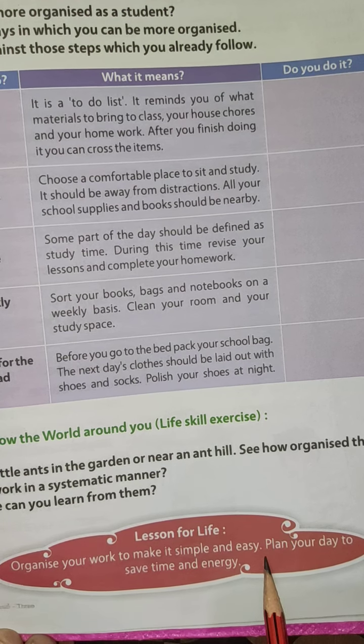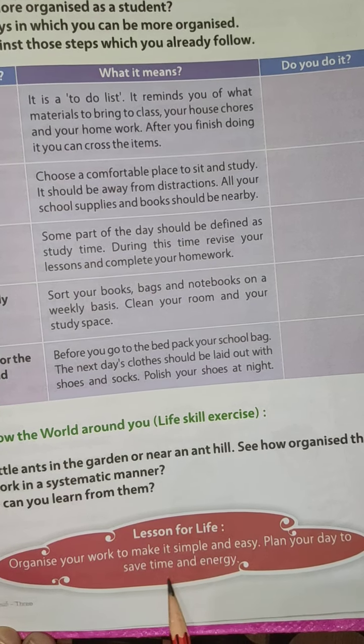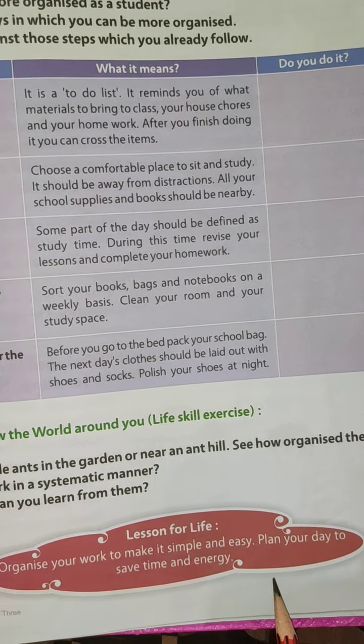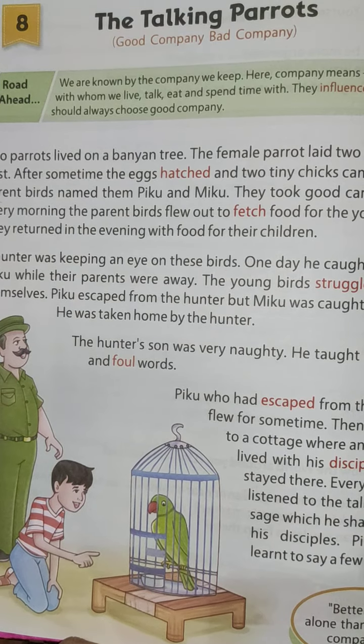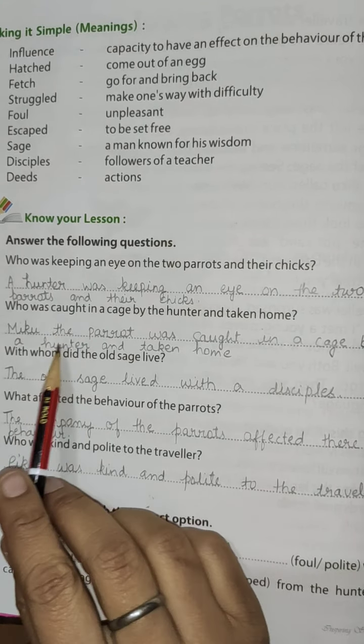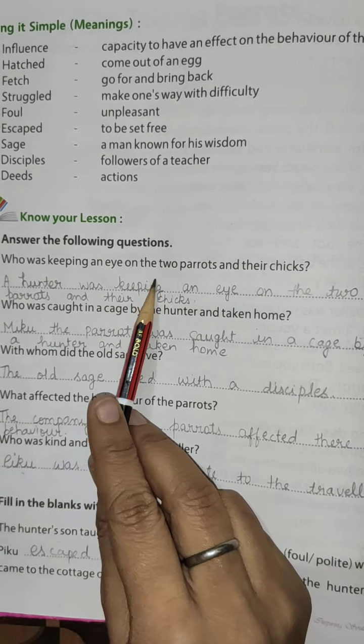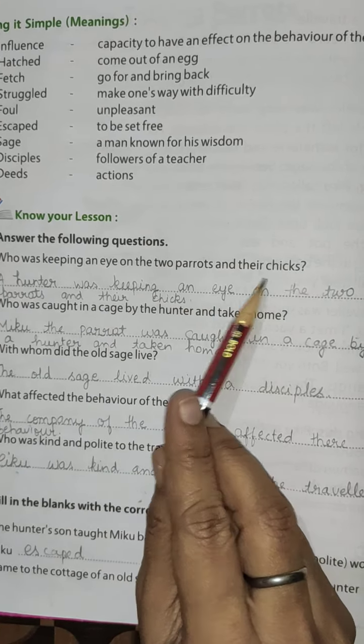The last chapter is The Talking Parrots. You have to learn the word meanings of these chapters also. Who was keeping an eye on the two parrots and their chicks? The hunter was keeping an eye on the two parrots and their chicks. Who was caught in a cage by the hunter and taken home? Miku the parrot was caught in the cage by the hunter and taken home.